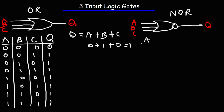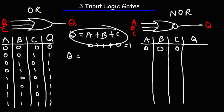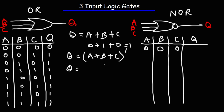Now let's finish up the truth table for the NOR gate. The output is simply the complement of the three-input OR gate result. The formula is Q = complement of (A + B + C). When all inputs are 0: 0 + 0 + 0 = 0, and the complement of 0 is 1, so we get a 1 at the output.